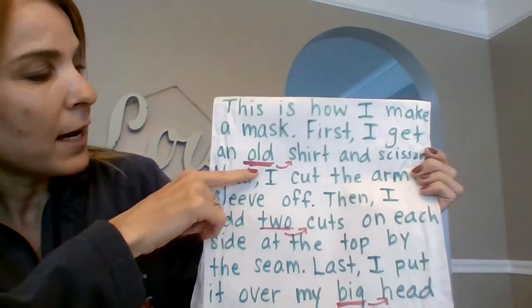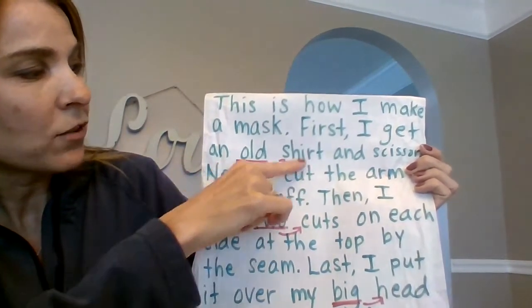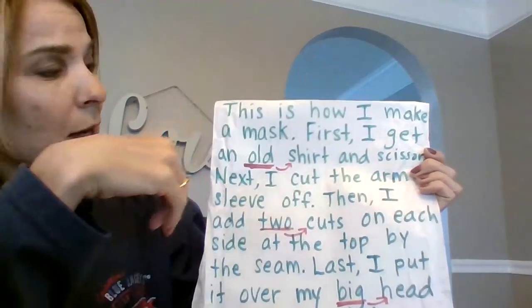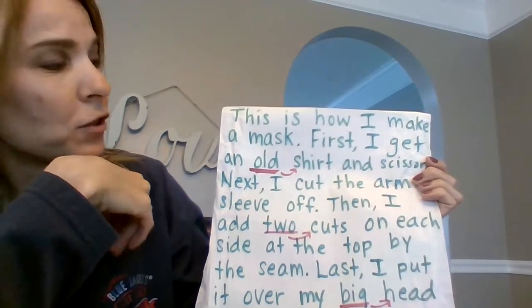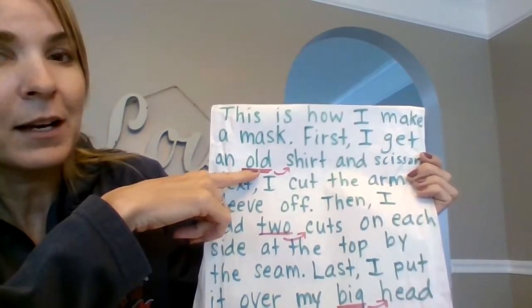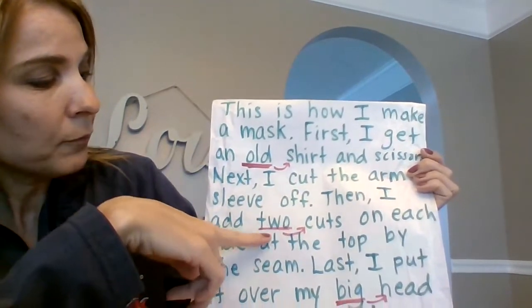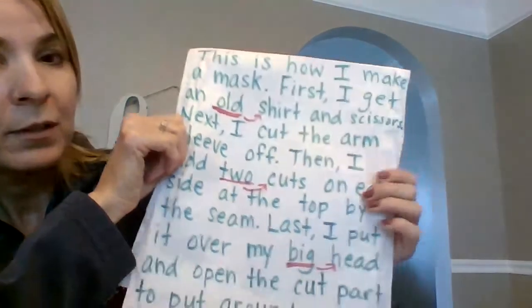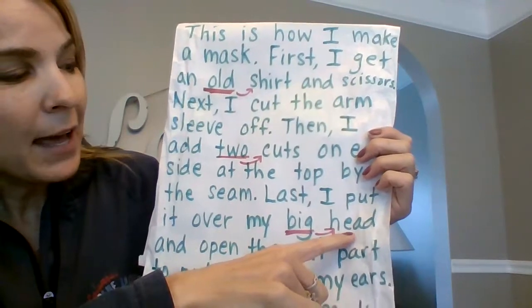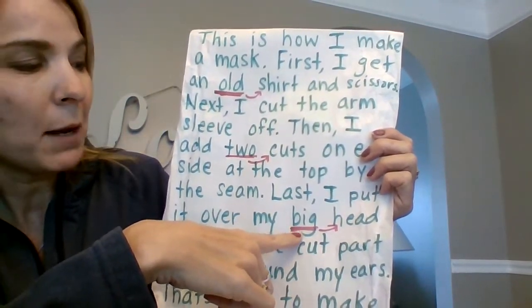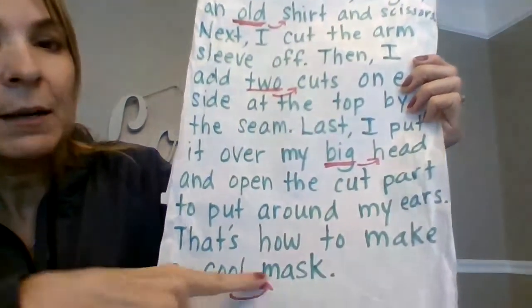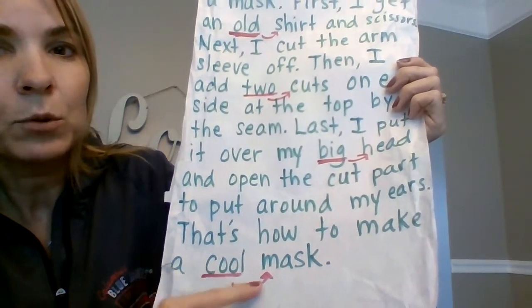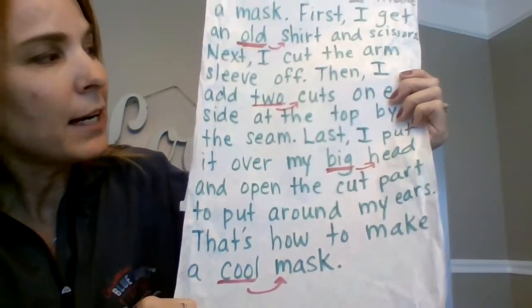Here are my adjectives. 'Old' describes the shirt — so when you make a mask, don't get a new shirt. Ask permission first before you cut something up. I'm talking about the cuts I'm making and how many — I'm making two. I'm describing my head: my head is big, so 'my big head.' And then I'm describing my mask. My mask is a noun, and here's my adjective: a 'cool' mask. So that is my writing.